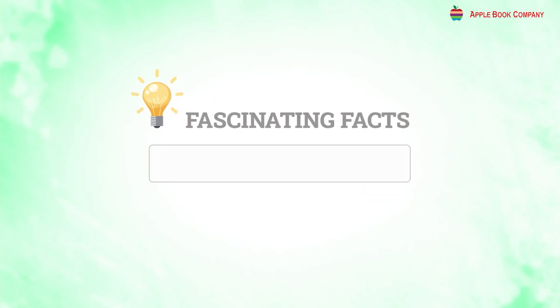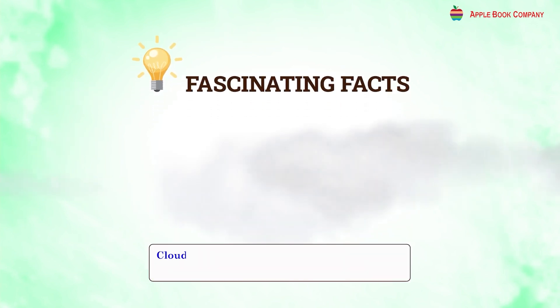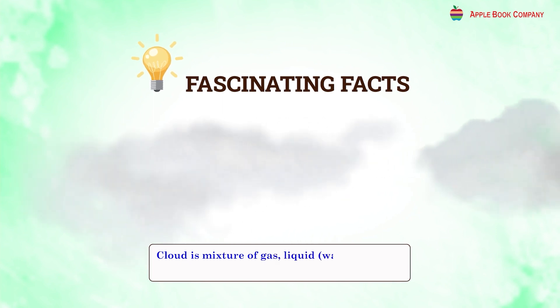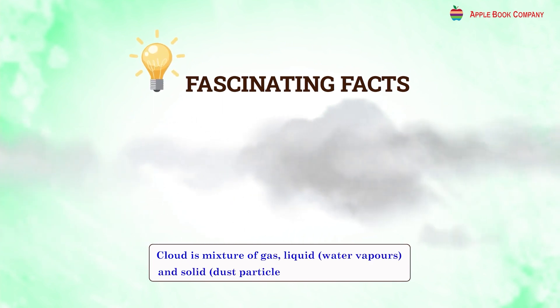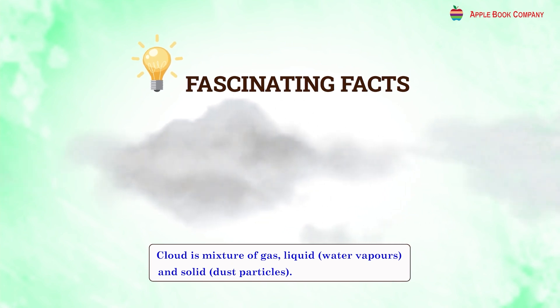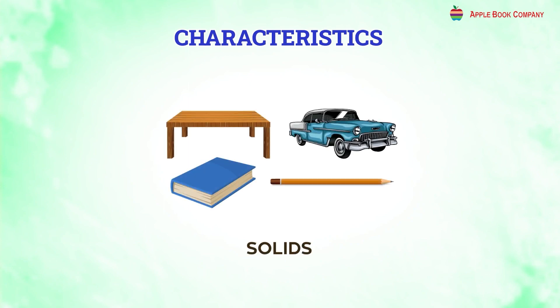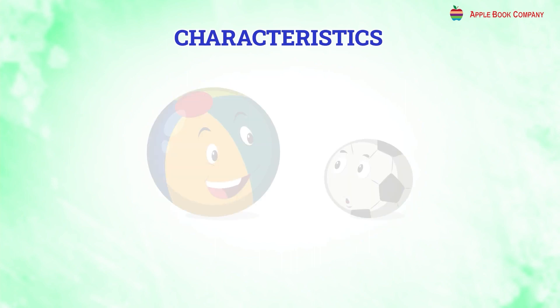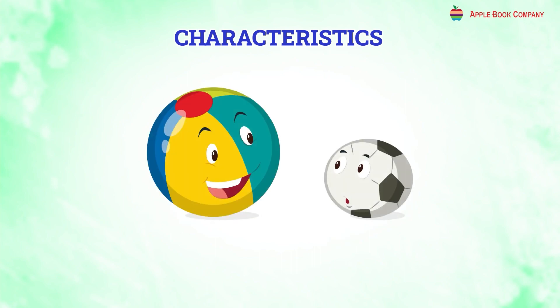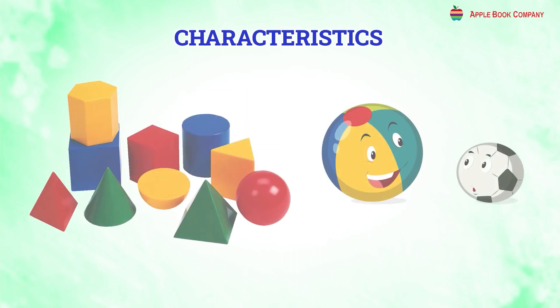Fascinating fact: A cloud is a mixture of gas, liquid (that is, water vapors), and solid (dust particles). Now let us understand the characteristics of solids. Solids have a definite shape. Solids have a definite size. Solids do not split or flow.